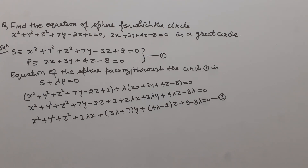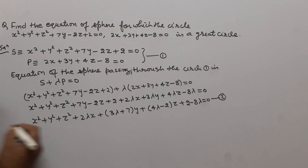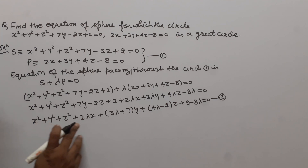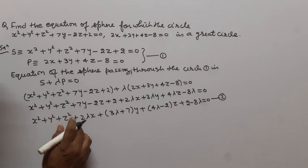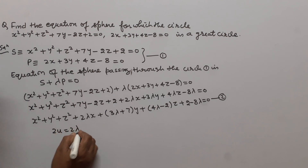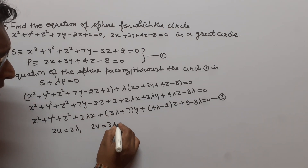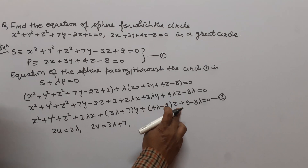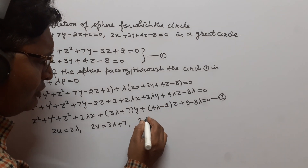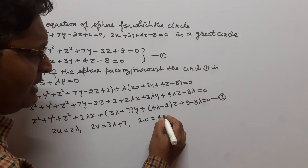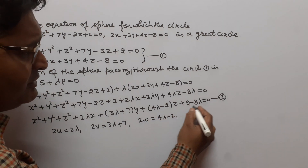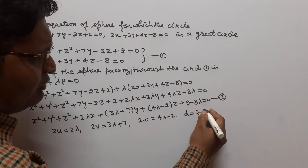We find the center of this sphere. Comparing with the general equation x² + y² + z² + 2ux + 2vy + 2wz + d = 0, we get: 2u = 2λ, 2v = 3λ + 7, 2w = 4λ - 2, and d = 2 - 8λ.